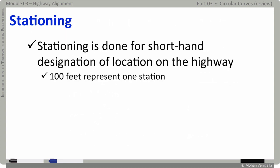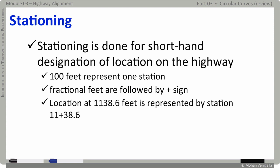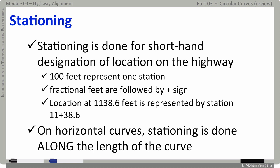And hundred feet represents one station fractional feet are followed by a plus sign for example location at eleven thirty eight point six feet is represented by station eleven plus thirty eight point six. On horizontal curves stationing is done along the length of the curve along the length of the curve.